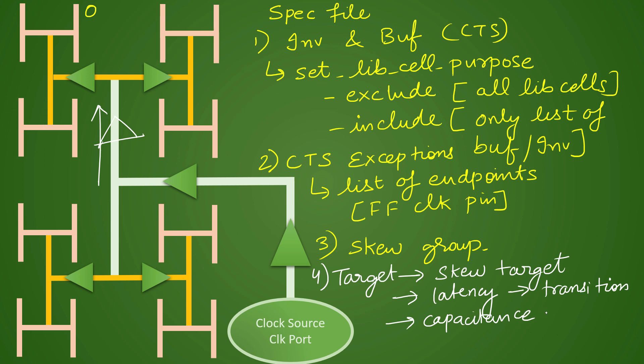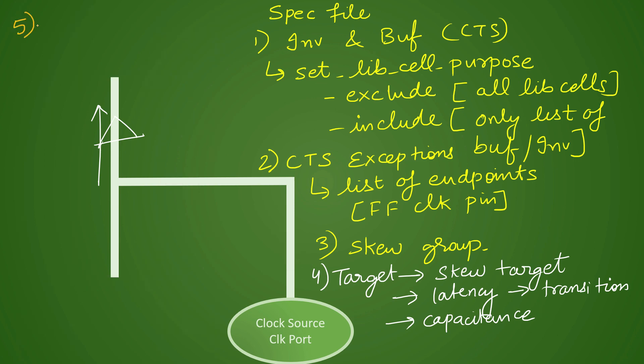While creating a clock tree we need to route the clock also, so we need to define the routing layers and generally we choose top metal layers. We need to specify min and max layer or upper and lower layer for routing the clock, and generally it is more than the signal. If your bottom four layers are for signal, then on top of that the next set of layers you will specify for clock routing. The command to do that in the Synopsys tool is set_routing_layer.